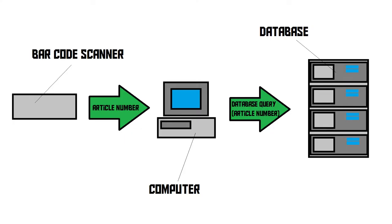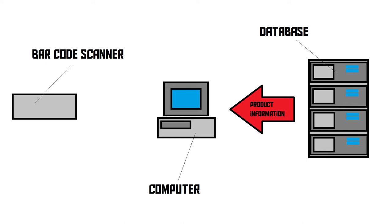Once the barcode is read, we've successfully converted this pattern of lines into a number or a string of characters. This number is sent to a computer that has a database — or more likely it's on a server or on the internet. The computer takes the number received from the barcode scanner, which is the article number, and looks for it in the database, where it will probably find a product with that number.